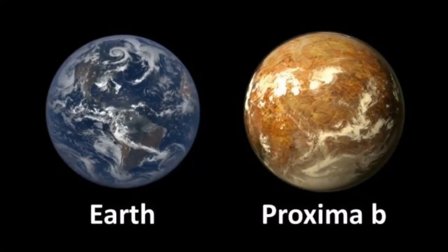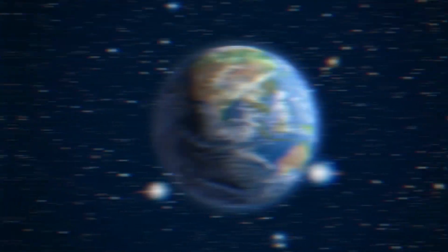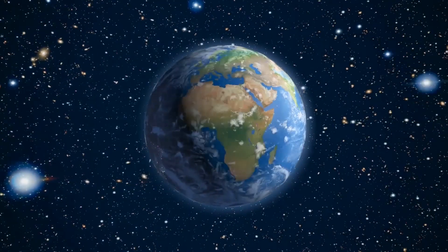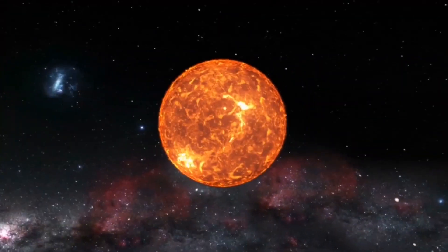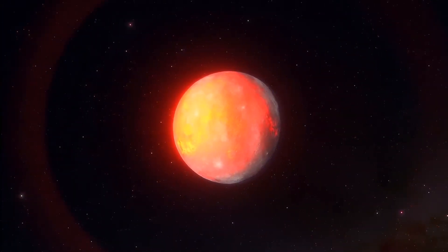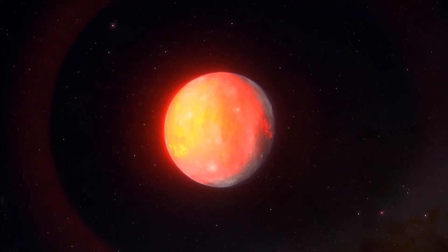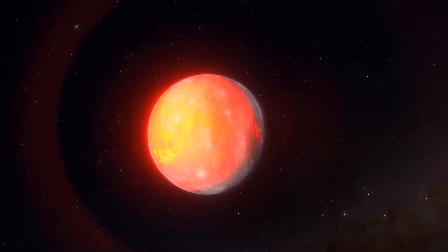Proxima Centauri b is very similar in size to Earth, with a mass of 1.17 Earth masses. It orbits its star in only 11.2 days, in contrast to our Earth's year-long orbit around our sun. That means Proxima Centauri b is a lot closer to its star than Earth is to the sun. But because the star is a red dwarf, much smaller and cooler than our sun, its orbit is indeed within the habitable zone of Proxima Centauri.